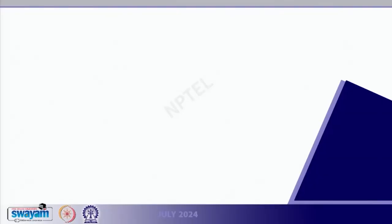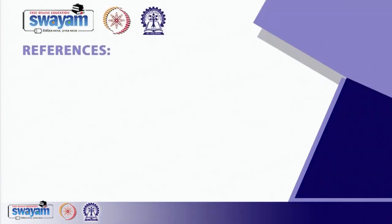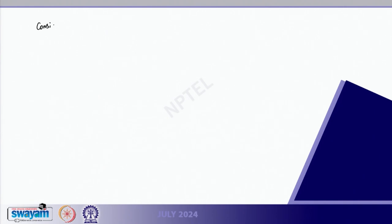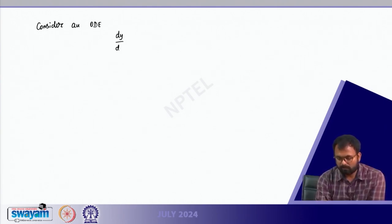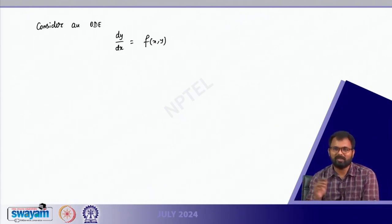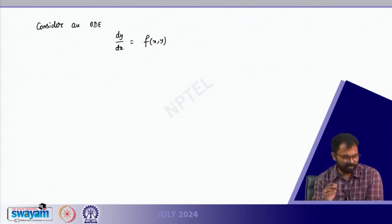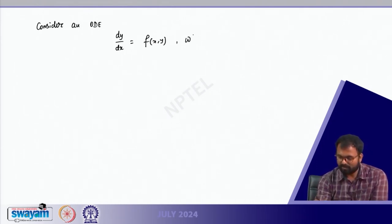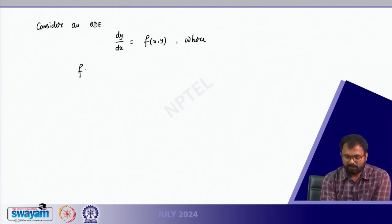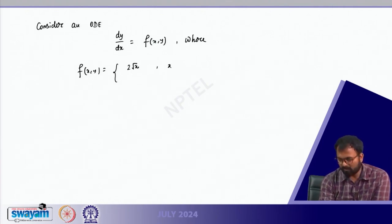Let us start with one example. Consider an ODE: dy/dx equals f(x, y). Note that f(x,y) and f(y,x) are the same — just a function of x and y. Here, the function f(x,y) is given by 2√x when x ≥ 0, and equals 0 when x < 0.